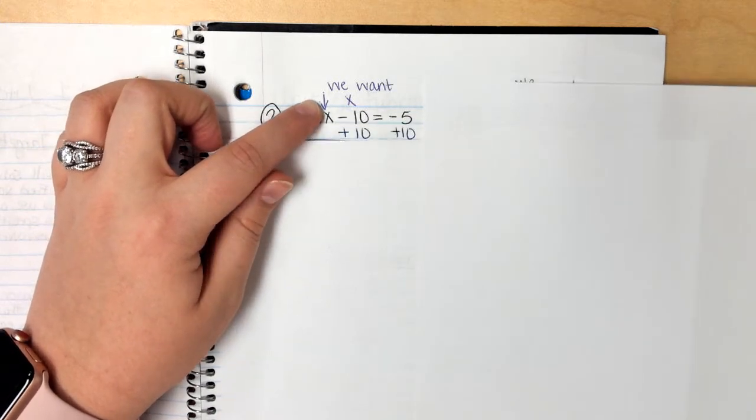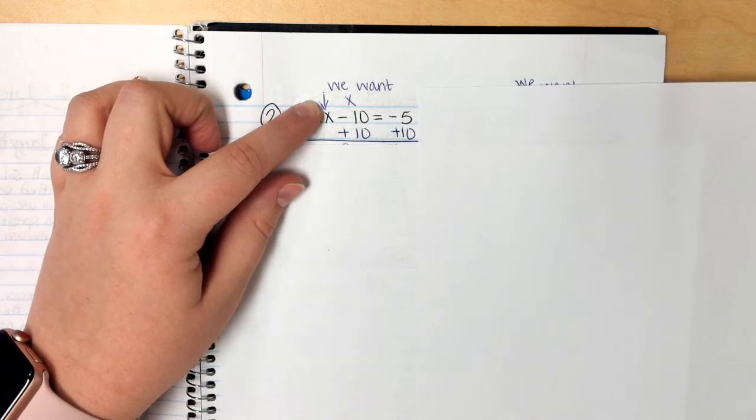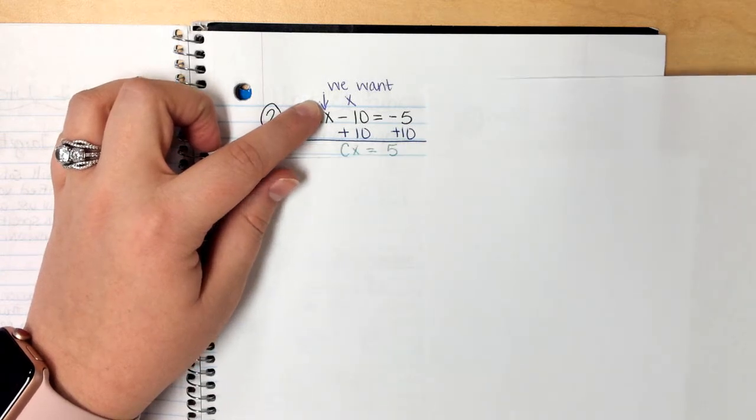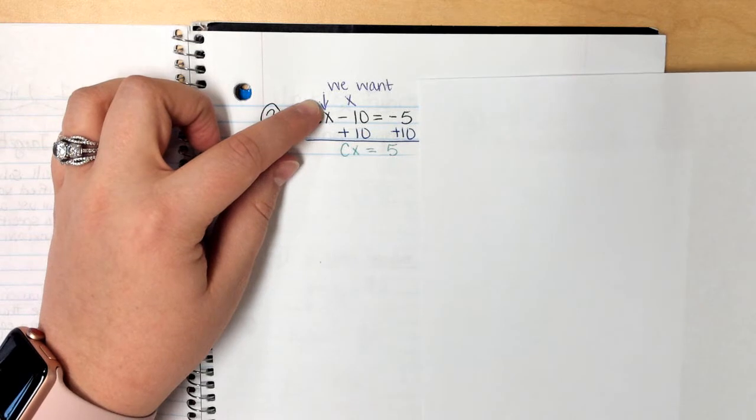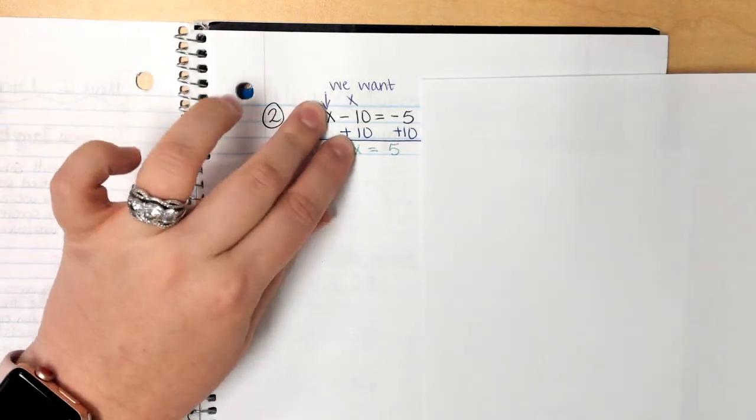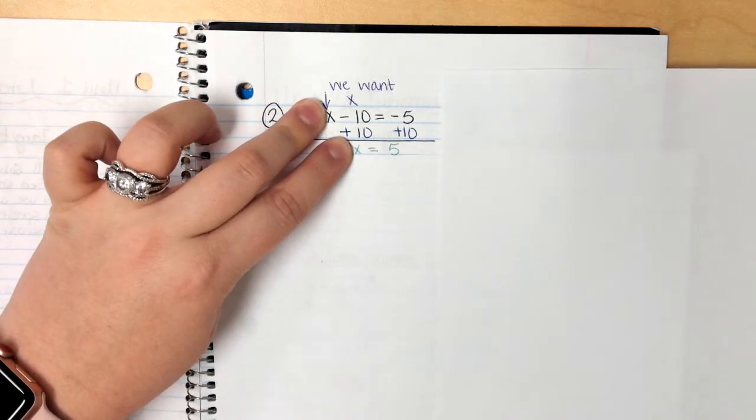For right now, I'm going to cover him up. This just says x minus 10 equals negative 5. I need to get rid of the negative 10. So just like last time, I'm just going to add 10 to both sides. We're not going to let it freak us out. So negative 5 plus 10 gives us 5. Now I'm pretending like the c is not here.